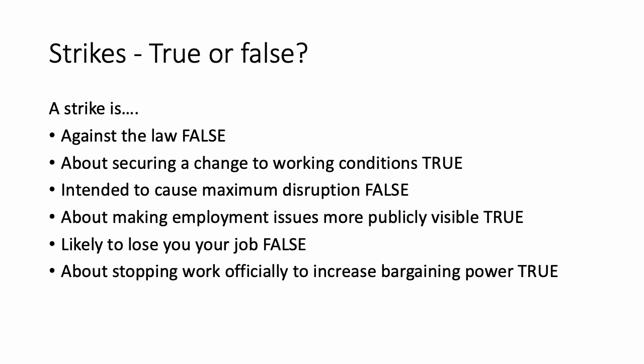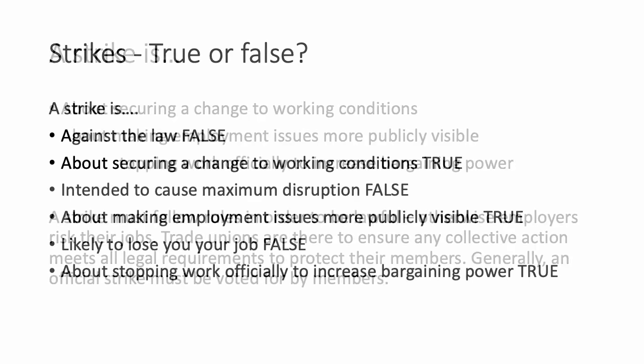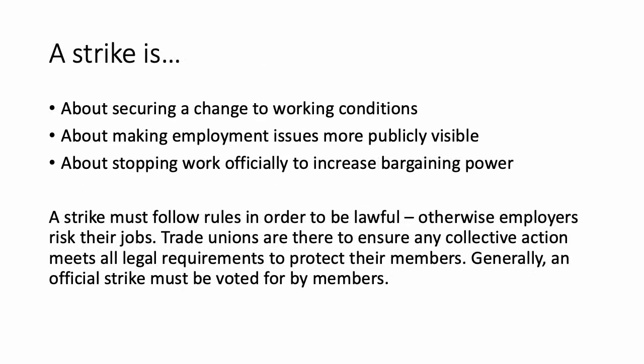When we say stopping work officially, a strike isn't just a walkout. A strike has to be organised and it must follow rules in order to be lawful, because otherwise employers can risk their jobs — it can be a situation in which you can get yourself in trouble. In order to stop work officially, we have things called trade unions. Trade unions are collective groups that people join when they go into certain trades — teaching unions, transport unions and all kinds of unions — and they make sure that any strikes or collective action meets all legal requirements to protect their members.